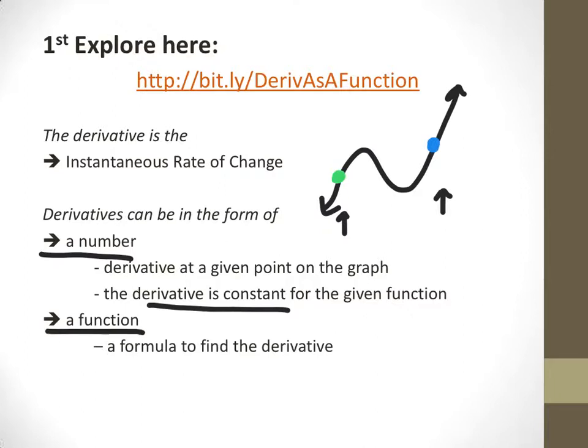When it is different, you have a function or a formula to find that derivative. When you find the derivative, sometimes it's a number, sometimes it's a function, and you just have to keep your eyes open for when you expect one to happen as opposed to the other.